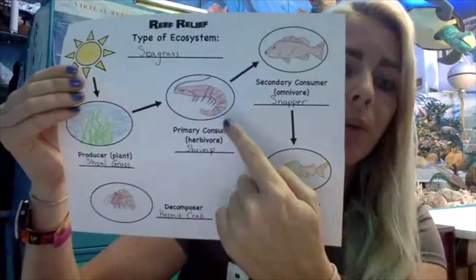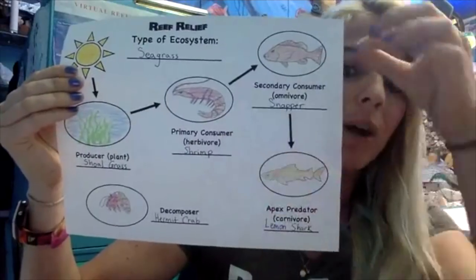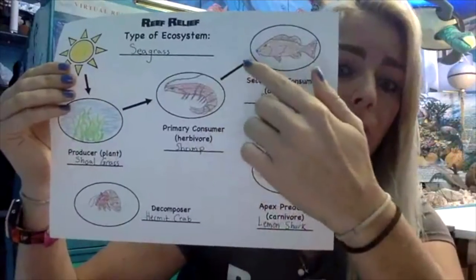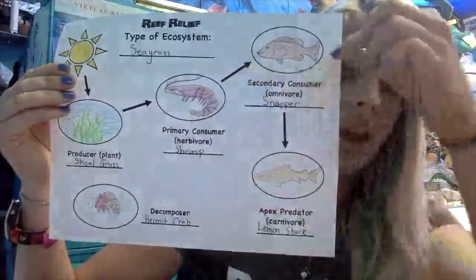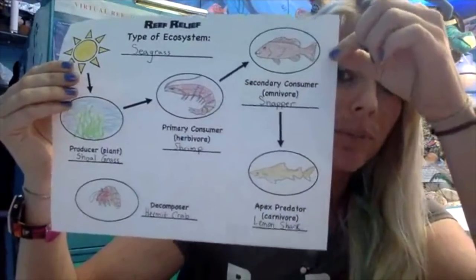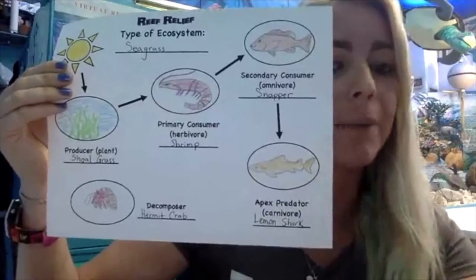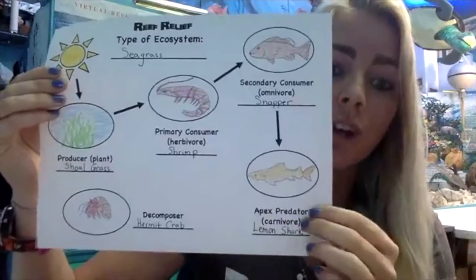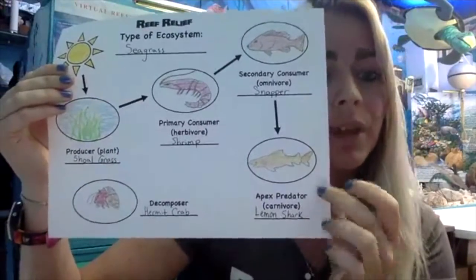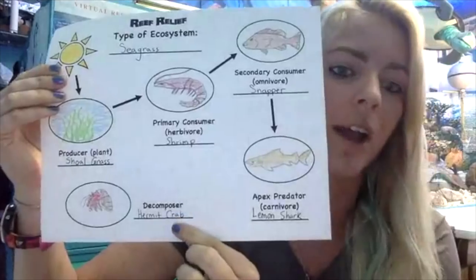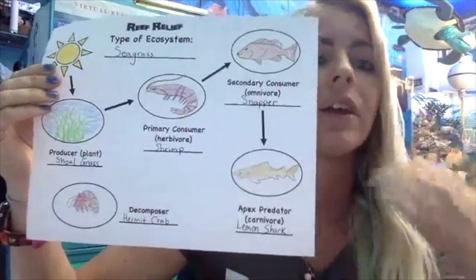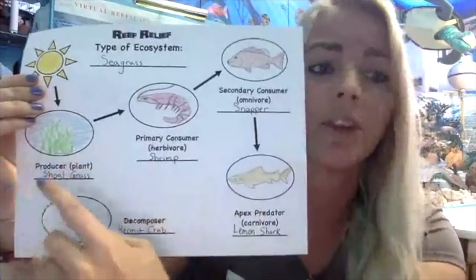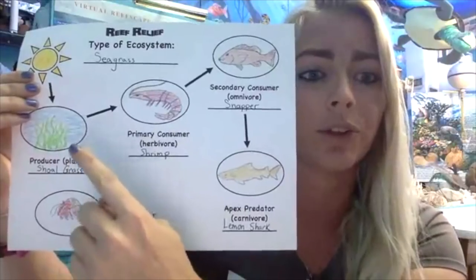After the primary consumer, I chose my secondary consumer to be a snapper. That snapper consumes a shrimp and only gets 10% of the energy as well — so that is my omnivore. Then finally I have my apex predator as a shark. The shark is the top of the food chain. Down here I have a hermit crab. This is just an example of a seagrass ecosystem — seagrass is the plant, and it is the producer in this ecosystem.